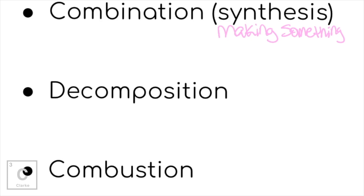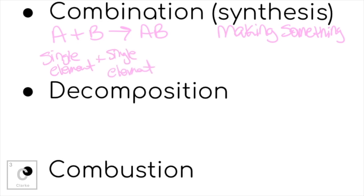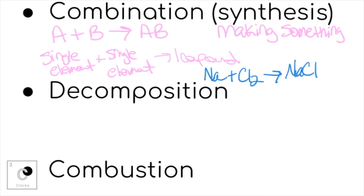The general formula is A + B → AB, meaning we took small reactants and added them together. It could be more than two — I'm just using two as my example. They come together to make a compound. Visually, it will always be a single element plus a single element, though we could have small compounds combining. The telltale sign is always one compound as your product. A real example: sodium reacting with chlorine gas yields sodium chloride — single element plus single element makes one compound. That's combination.